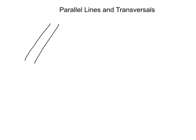Just as a refresher, parallel lines have the same slope, and they never will cross each other. For example, here we have a couple of parallel lines. These are very short lines, but we know they keep going and going and going. Just picture these never crossing each other. Here's another example of parallel lines. They could be pointing any direction, but they always have the same slope and will never touch.